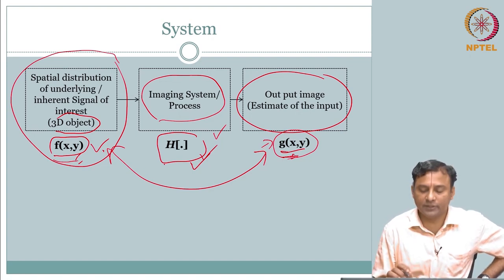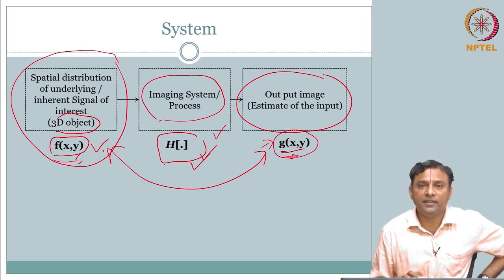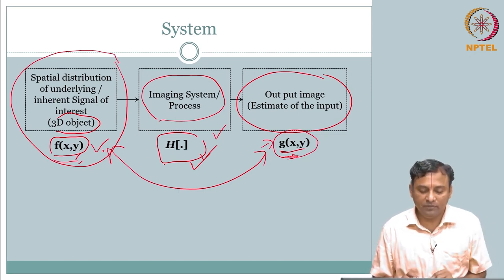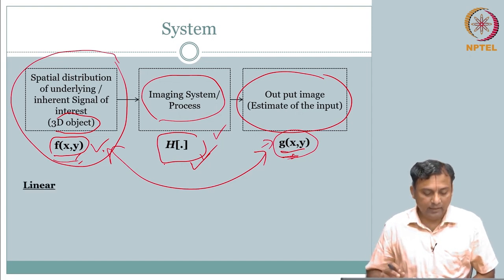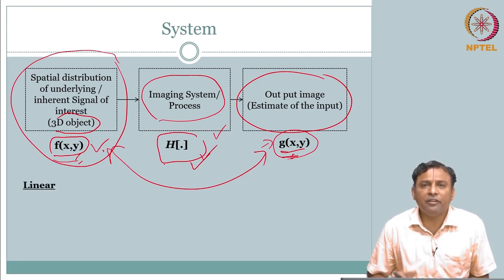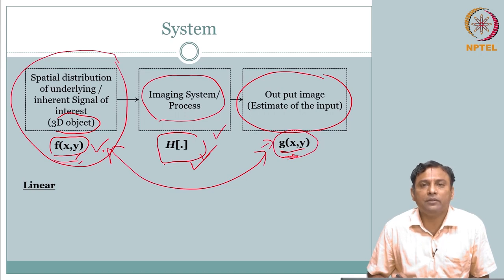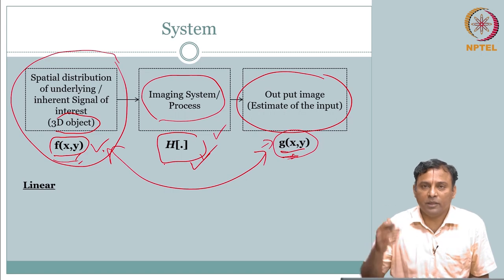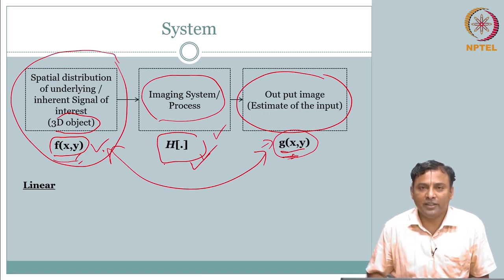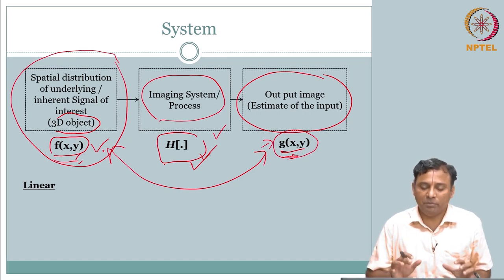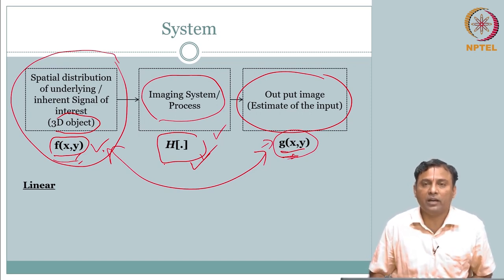One of the first important properties of a system is linearity - nothing different from what you would have known from 1D signals and systems. When you say linearity, what does it mean? Think about the big picture - what does it try to convey?